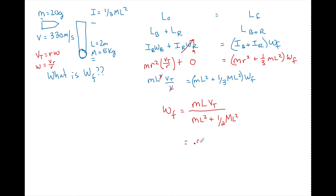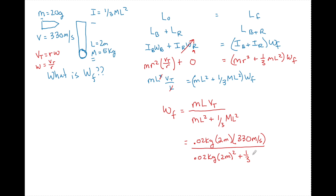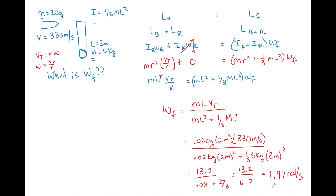Substituting in the numbers: numerator is 0.02 kg × 2 m × 330 m/s = 13.2. Denominator is 0.02 × (2)² + (1/3) × 5 × (2)² = 0.08 + 6.67 = 6.75. So ω_final = 13.2 / 6.75 ≈ 1.97 radians per second. And that's how you solve for that. If you have any questions about this, leave them in the comments below. This is a question you're going to see on any AP or entrance exam — it's a very classic angular momentum question. Enjoy the rest of your day!